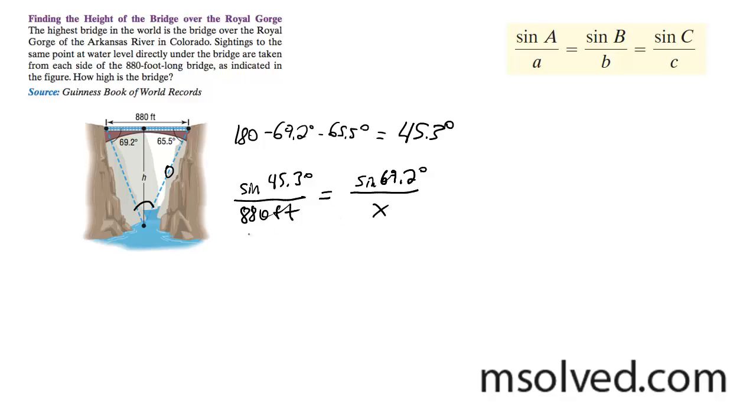And then cross multiply. So I'm going to get x times sine of 45.3 degrees is equal to sine of 69.2 degrees times 880 feet. Divide through, x equals sine of 69.2 degrees times 880 feet divided by sine of 45.3 degrees.